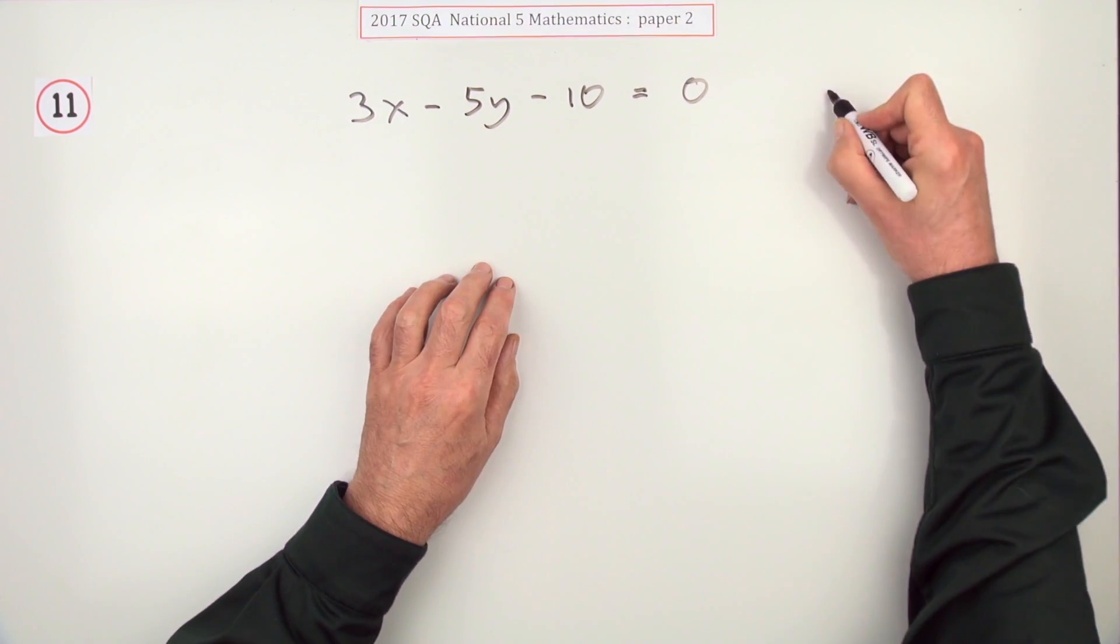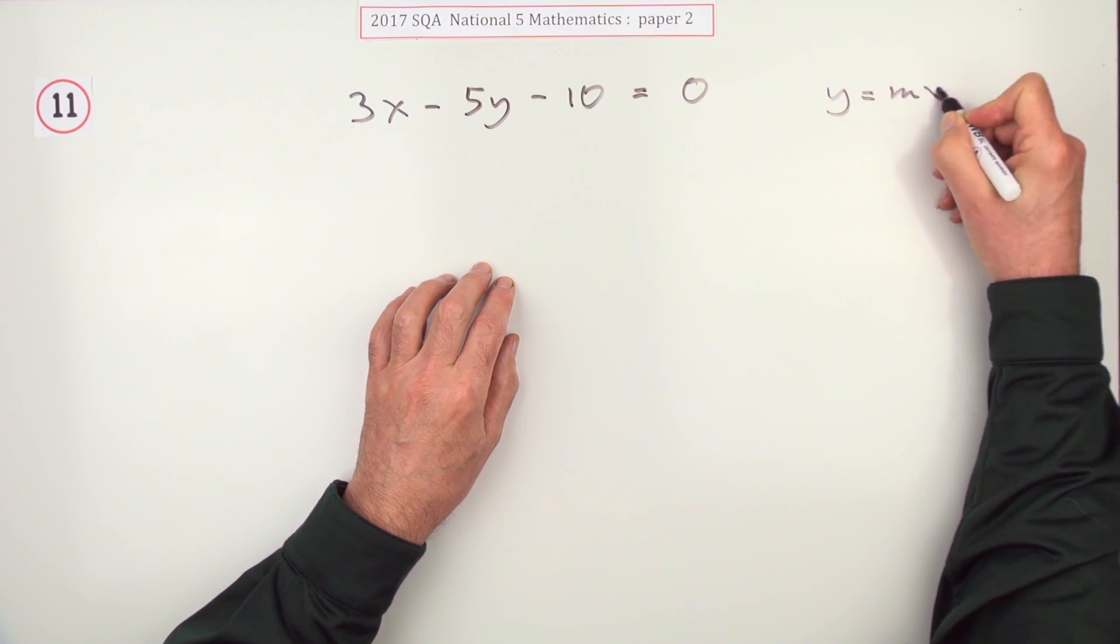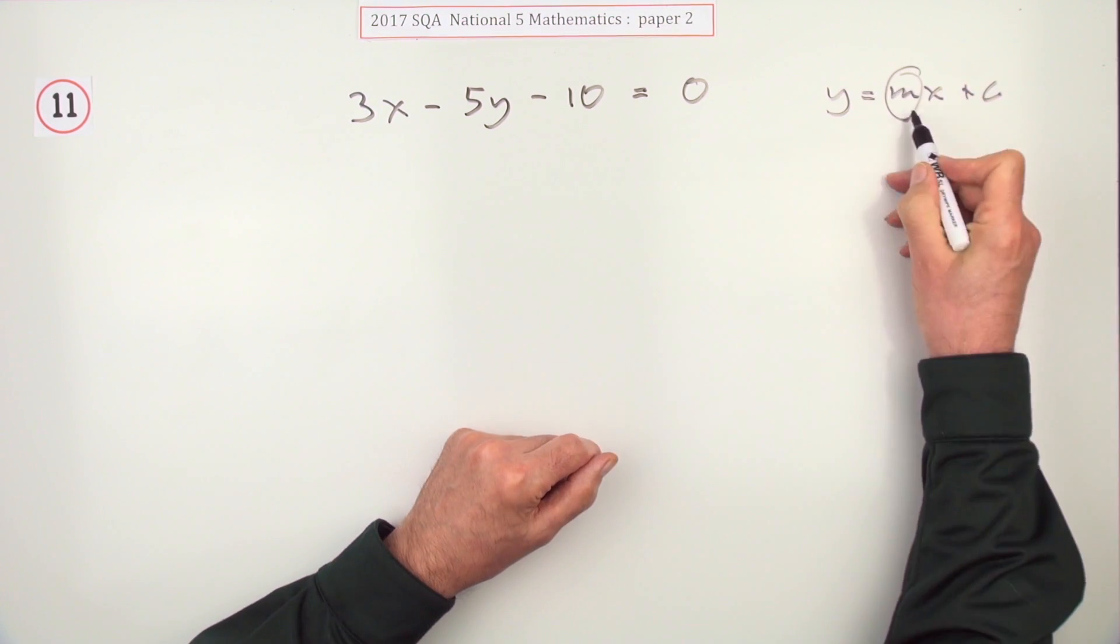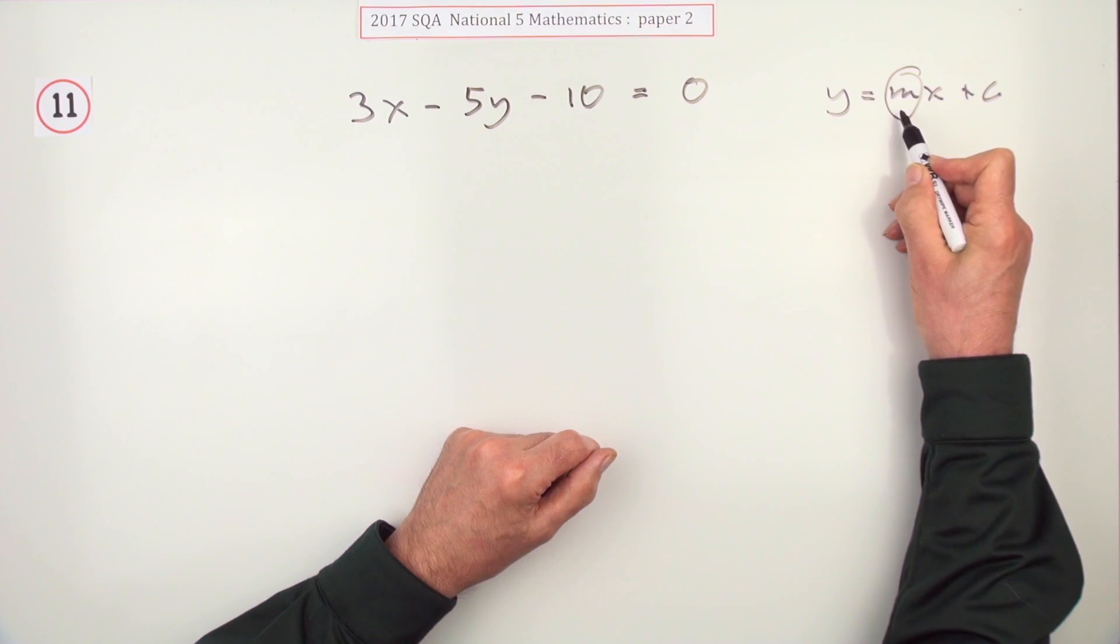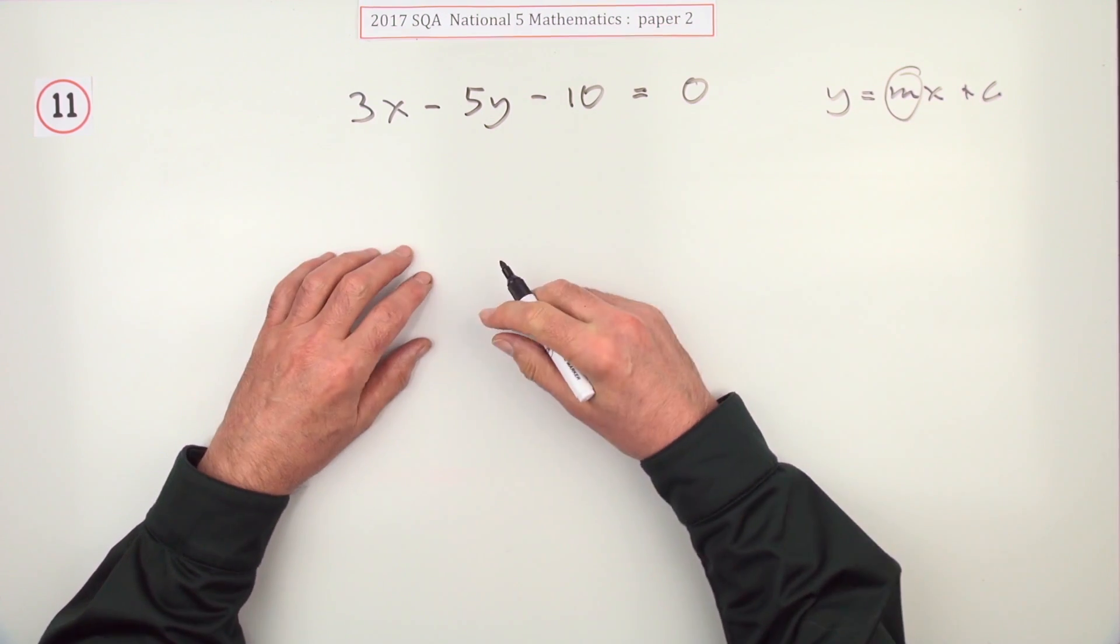You'll only get the gradient if you've got it in the form of y equals mx plus c. Then the coefficient of x, the multiplying number, is the gradient. So I'll need to rearrange that.